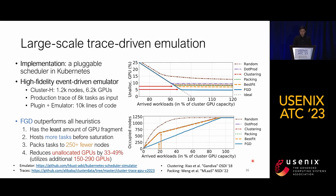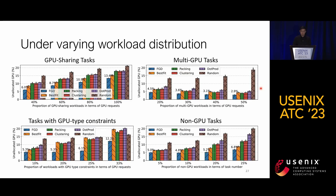In the upper figure, FGD reduces the ultimate unallocated GPUs by 33% to 49%, utilizing an additional 150 to 290 GPUs compared to best fit and other baselines. We also evaluated FGD on a wide variety of workloads, including traces with different proportions of GPU sharing workloads, multi-GPU workloads, tasks with GPU affinity constraints, and non-GPU tasks. Our results show that FGD achieves the lowest wasted GPUs across all scenarios.